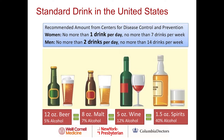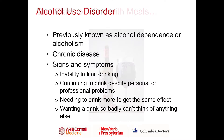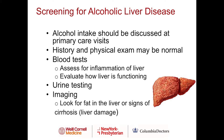The amount of alcohol is actually very important. When getting a history of drinking one glass of wine, what is the actual quantity? Patients can describe different amounts of alcohol in one glass. Alcohol use disorder was previously known as alcohol dependence or alcoholism, and it's a chronic disease condition. Signs and symptoms include an inability to limit drinking, continuing to drink despite personal or professional problems, needing to drink more to get the same effect, or wanting a drink so badly one can't think of anything else.